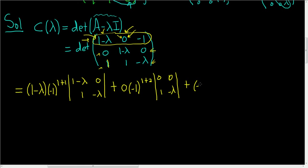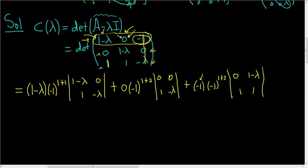Then we go to the third entry, which is −1. The sign factor is (−1)^(1+3). We cross out row 1 and column 3, leaving the submatrix: 0, 1−λ, 1, 1.